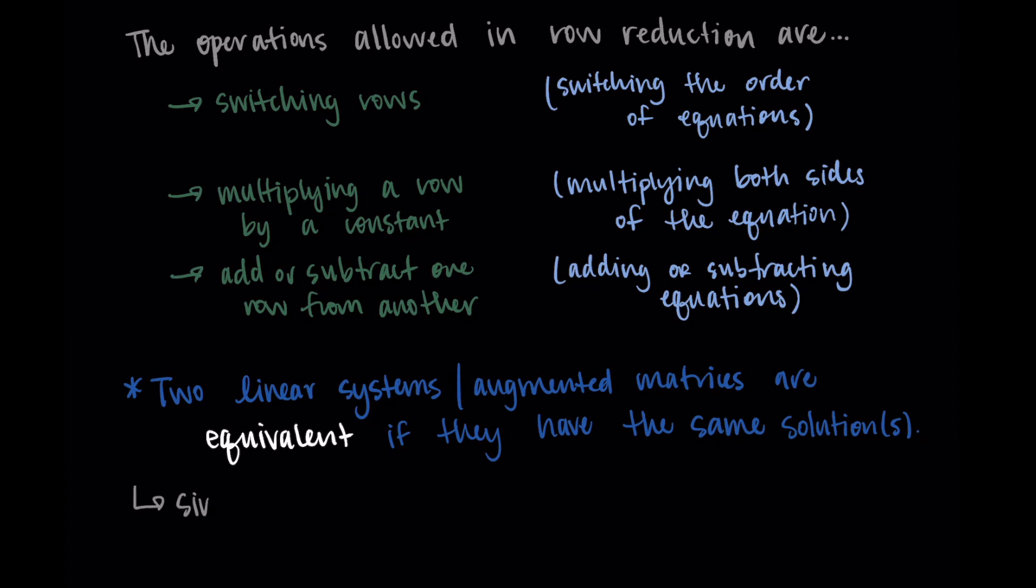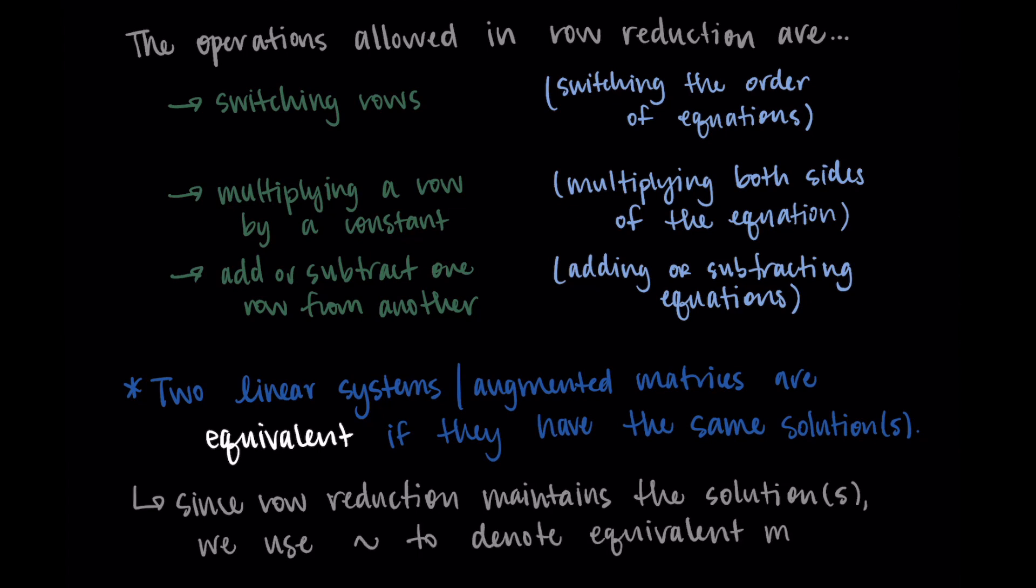And in row reduction, we're maintaining the solutions. And instead of using equal signs, we're going to use this little tilde, this squiggly symbol to denote equivalent matrices. This is just to acknowledge that we are manipulating what the matrix looks like, but we're maintaining the solutions. So we have equivalent matrices because we are getting the same solutions. But instead of writing equals, we'll use this tilde sign.